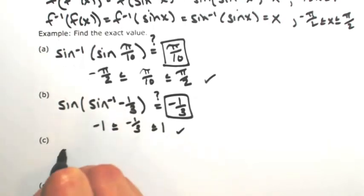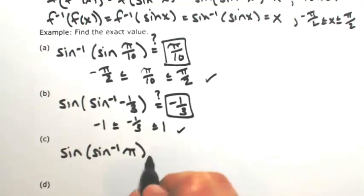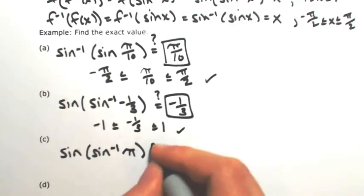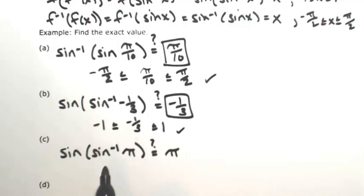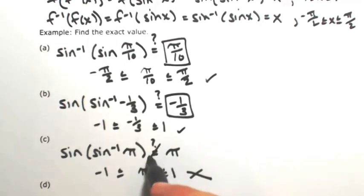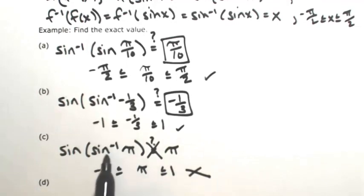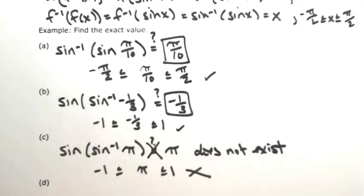Let's do another one. Let's say we have the sine of the inverse sine of pi. It would be really nice if they just undid each other and gave us pi, but we have to check the domain of the inverse sine. The domain of the inverse sine is the range of sine, which is from negative 1 to 1. And pi, which is about 3.14, is not between negative 1 and 1. So the equation is not true — the inverse sine of pi does not exist, so the composition also does not exist.